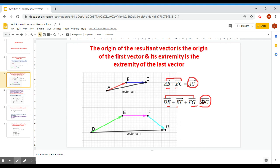When we talk about additions of consecutive vectors, we are not talking about the magnitudes of vectors. Because the distance from A to B plus the distance from B to C will not give me the distance from A to C. It is something else. It is not the distance.